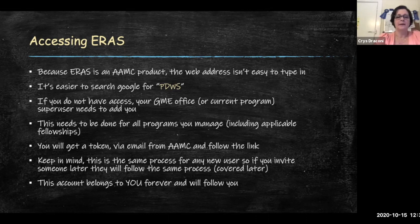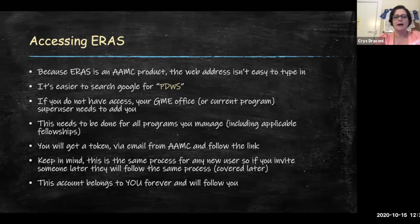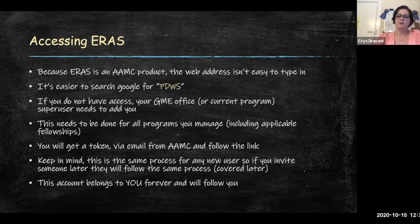You will receive what's called a token via email from the AAMC and you'll follow the link. The link expires — I think it's about 90 days — and obviously as coordinators you can handle that within 90 days. But later you'll also learn how to add other users, so it's good to understand the process since faculty are sometimes not good at following through within that window.